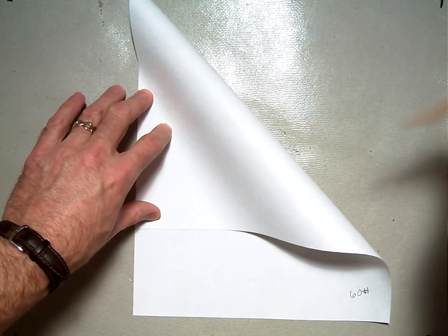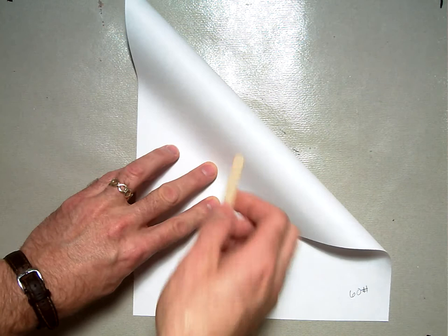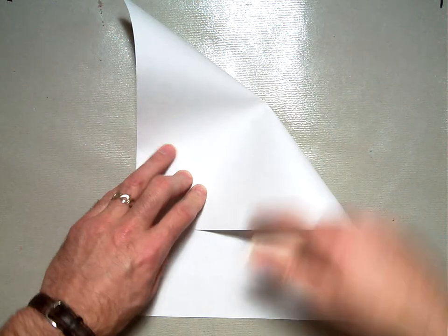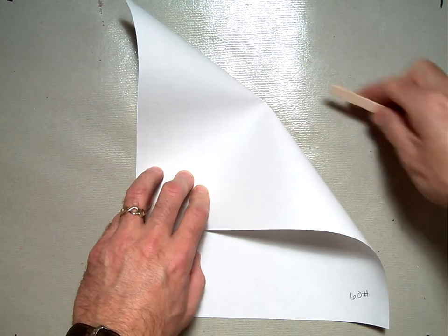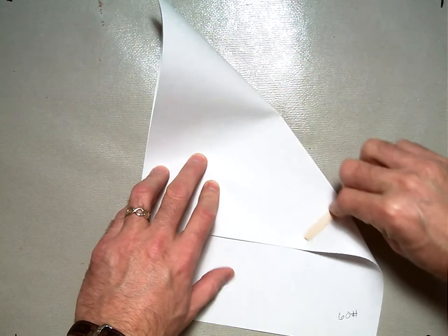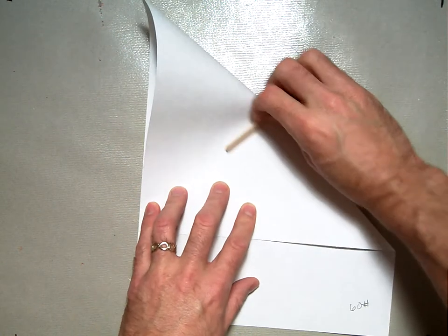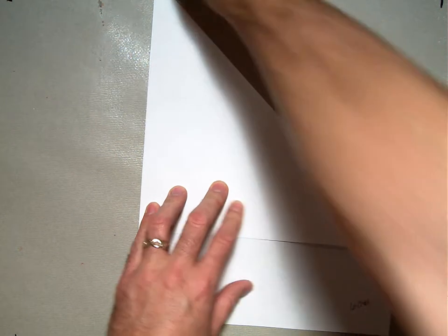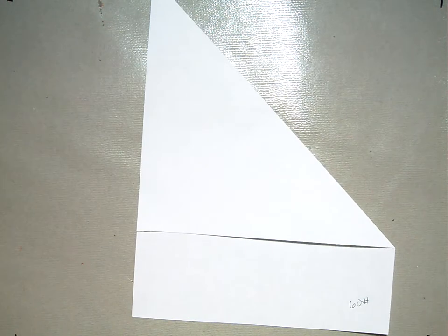Once you get that parallel, take your bone folder and push it towards the crease so that you have a bent part right here in the middle, and then take your bone folder and slide it out to the corner. And then the other direction, slide it out to the corner. So you have a big triangle like this.